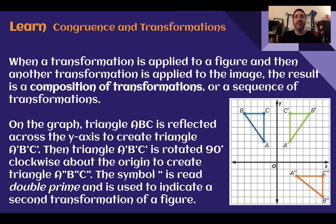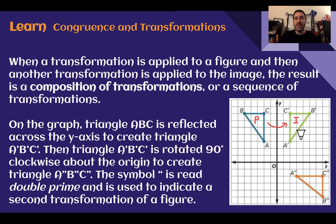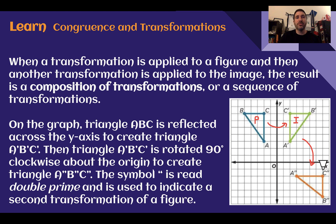When a transformation is applied to a figure, and then another transformation is applied to that image, the result is a composition of transformations, or a sequence of transformations. On the graph, we can see our original pre-image — it does not have those apostrophe prime symbols. First, it was reflected across the y-axis to create our image. Then, it was rotated 90 degrees clockwise to produce a second image. The number of apostrophe symbols indicates how many transformations have occurred — double prime means two transformations, triple prime means three.